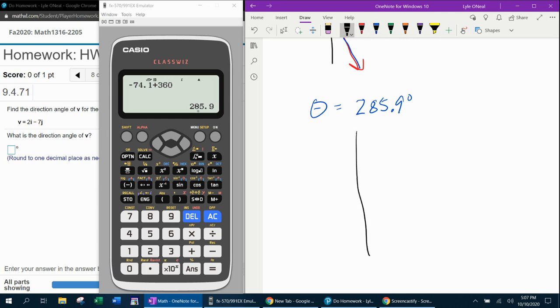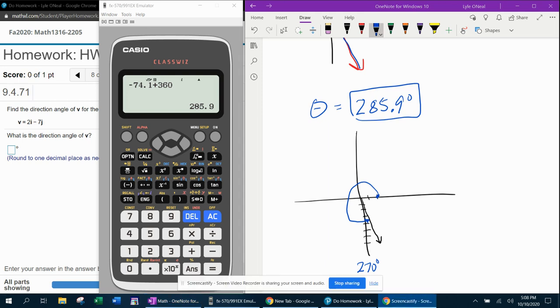And again, I'm going to do this one more time just so I feel good about it. I'm going to graph this vector again. Over 2, down 7. And this angle that we just found, the answer is how much it takes to start from 0 to get around there. So this would be 270, 285 is a little bit more than that. And so I feel good about that answer. I feel really good about that answer.